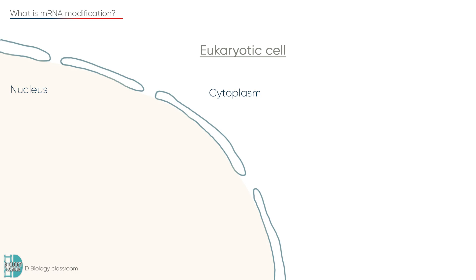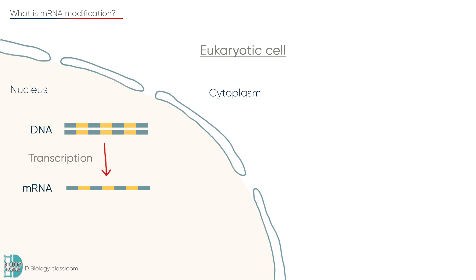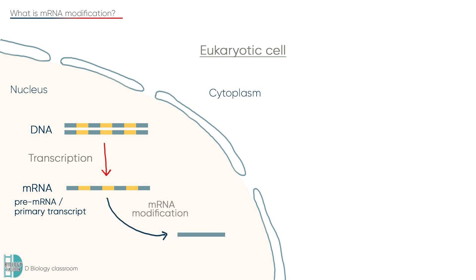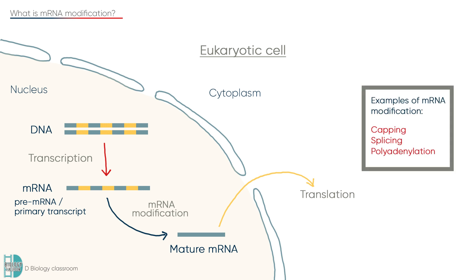In eukaryotes, transcription occurs in the nucleus, where mRNA is synthesized from DNA. This newly made mRNA is called a pre-mRNA or primary transcript. After post-transcription modification, it becomes a mature mRNA. It can now leave the nucleus for translation so protein can be synthesized. Capping, splicing, and polyadenylation are some examples of mRNA modification.